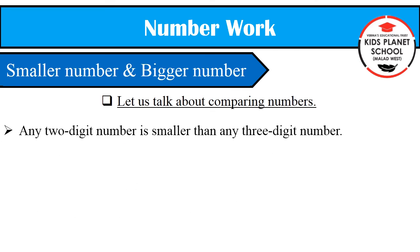Any two digit number is smaller than any three digit number. For example, here 85 is a two digit number and 459 is a three digit number. Therefore, the two digit number, i.e. 85, is smaller than the three digit number, i.e. 459.